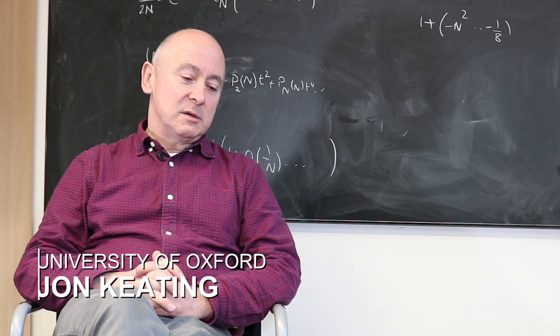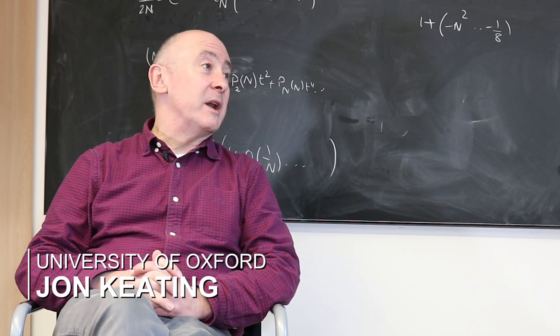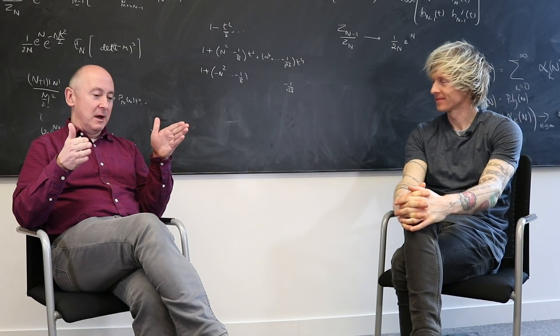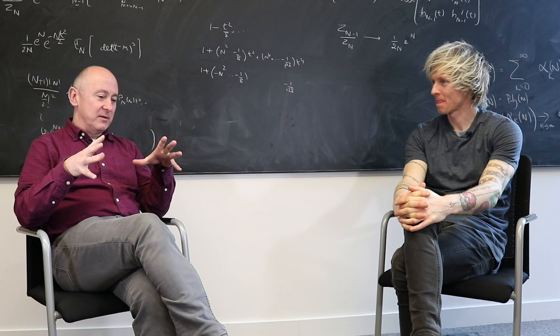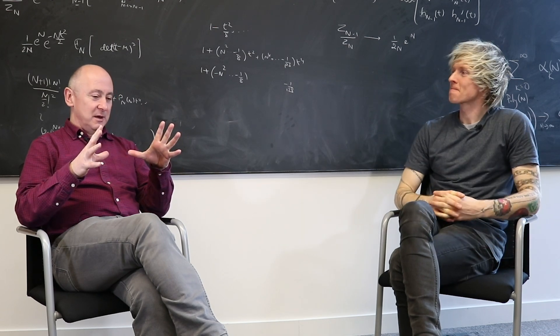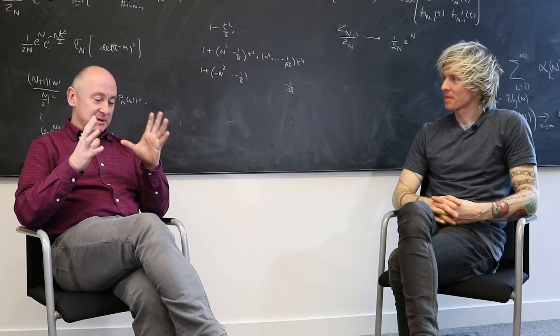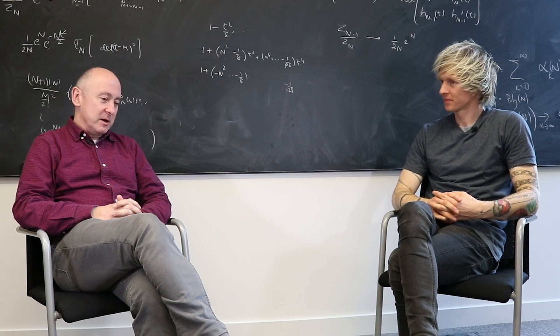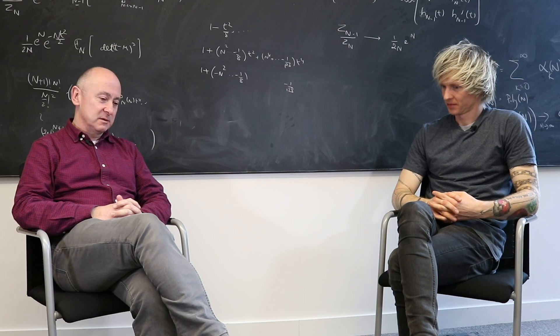A lot of my research at the moment relates to random matrices. A matrix is a collection of numbers. Mathematicians like to view that as a single object, and it has various properties that one might want to inquire about, eigenvalues and eigenvectors, for example, if it's a square matrix.